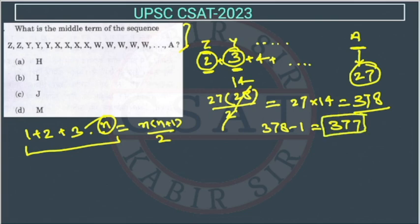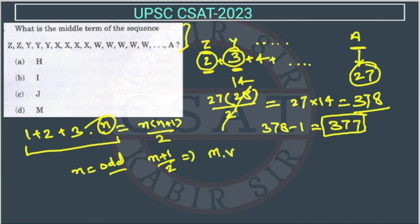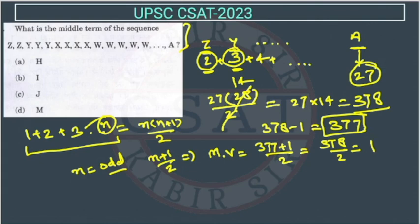Now, what will be the middle value? We know that if n is odd, the middle value is at position (n+1)/2. We have 377 which is odd, so the middle value will be at position (377+1)/2 = 378/2 = 189. So the middle term is at position 189.